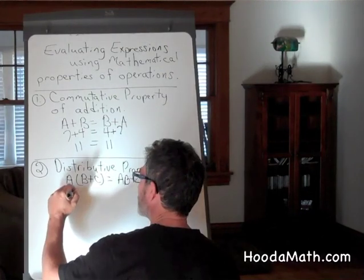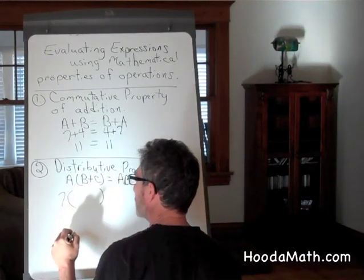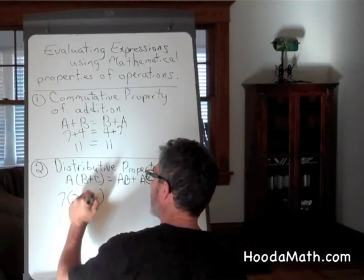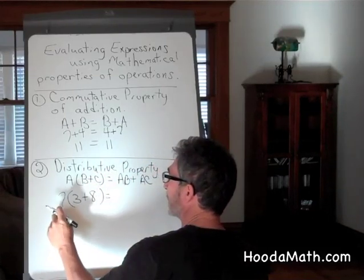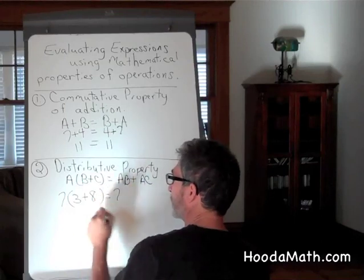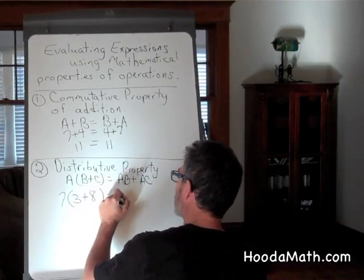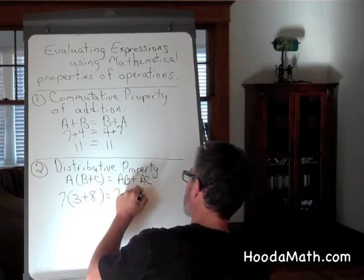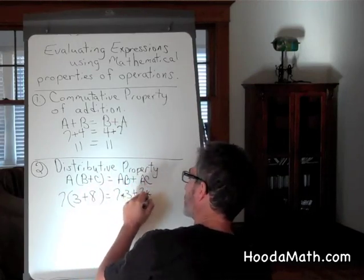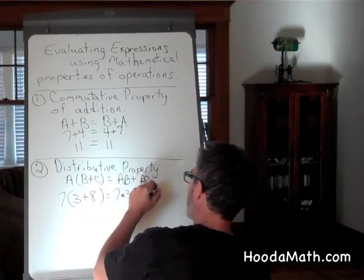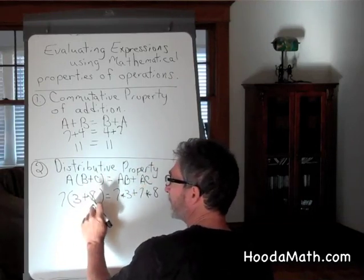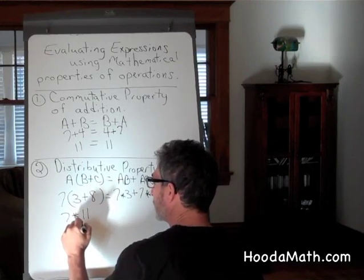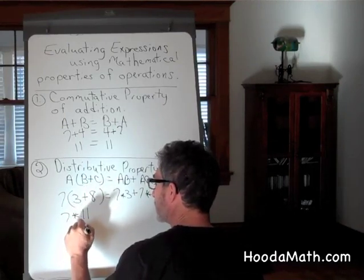7 times the quantity 3 plus 8. Does that equal the same thing as 7, the first number, times the second number, plus 7 times the third number, 8? 3 plus 8 equals 11. 7 times 11 equals 77.